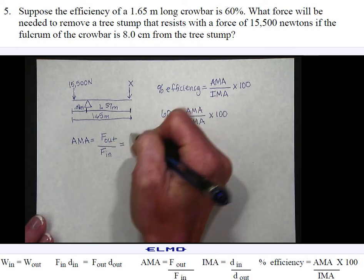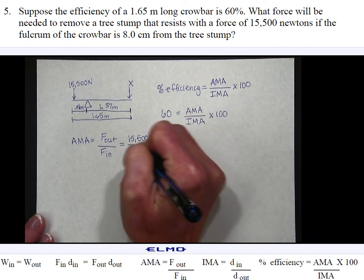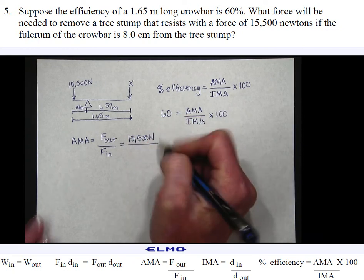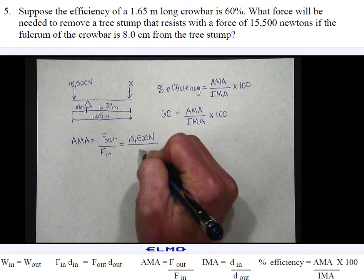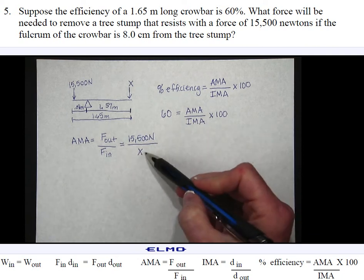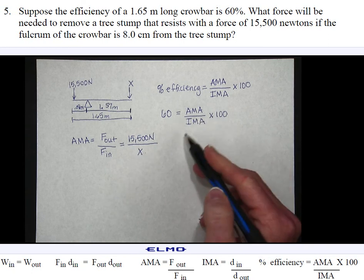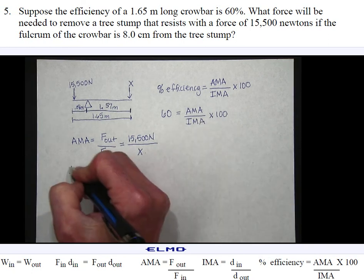Which is equal to my force out or my resistance force divided by my force in or my effort force. The force of resistance is 15,500 newtons. And my force that I'm going to apply, or my effort force, is not known right now, so I'm going to put an X in there. Now because this has a variable in it, I'm not going to plug it into my efficiency equation just yet. So I'm going to move on and try to find ideal mechanical advantage.